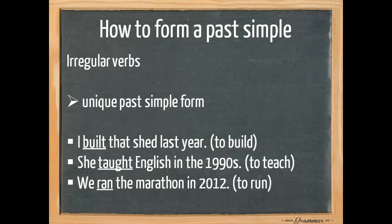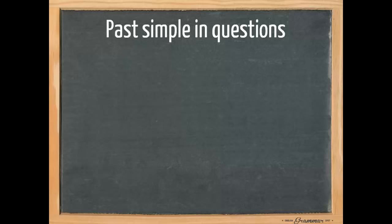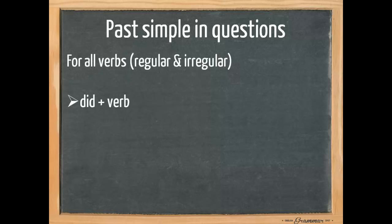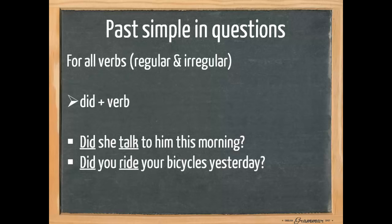Let's have a look at the past simple in questions. For all verbs, regular and irregular, we use the auxiliary verb to do but we need the past simple tense, which is did and the infinitive form of the verb. Did she talk to him this morning? Did you ride your bicycles yesterday? Did they work on the farm last year?